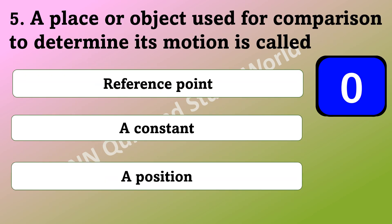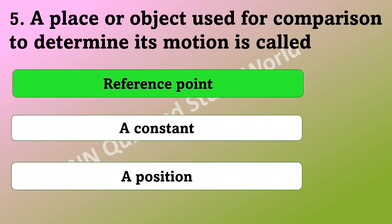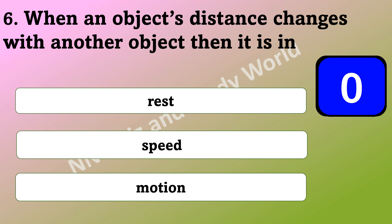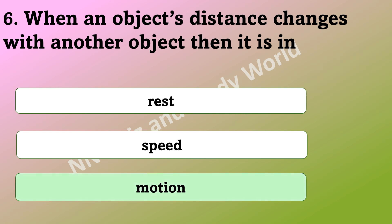What is a place or object used for comparison to determine its motion? Is it reference point, a constant, or a position? What is an object in when the object's distance changes with another object? Is it rest, speed, or motion? The answer is the object is said to be in motion.